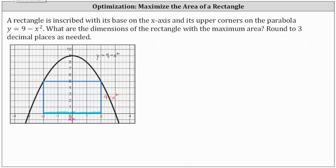From here, we're trying to maximize the area of the rectangle, where the area equals length times width. In this case, the area is equal to 2x times the quantity 9 minus x squared. Distributing, we write the area as 18x minus 2x cubed.